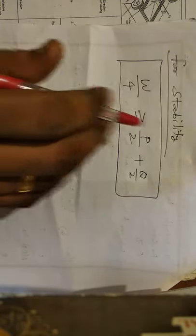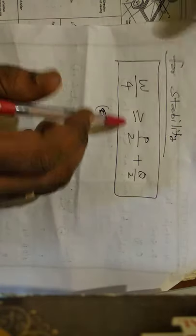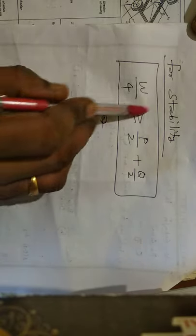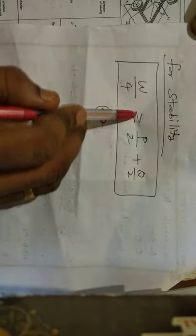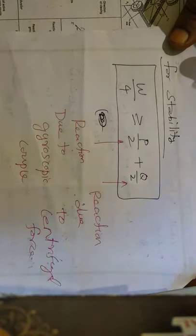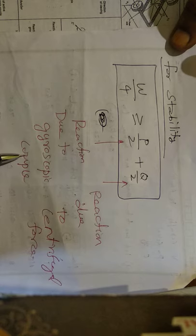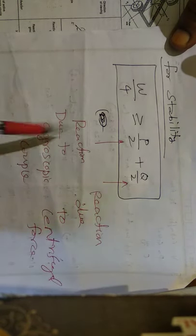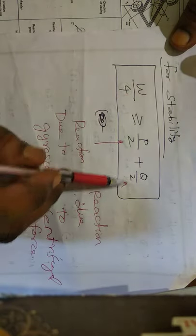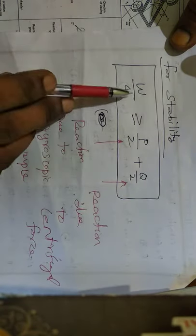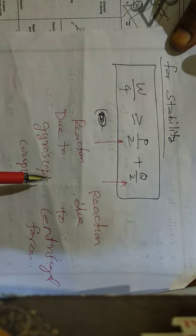Finally, the stability condition for a four-wheeled vehicle: the weight reaction W by 4 must be greater than or equal to V by 2 plus Q by 2. Here, P by 2 is the reaction due to the gyroscopic couple, and Q by 2 is the reaction due to centrifugal force. This is the weight of the vehicle. Every value must be positive, and W by 4 must be greater — this is the stability condition.